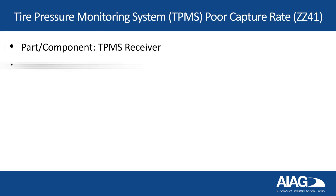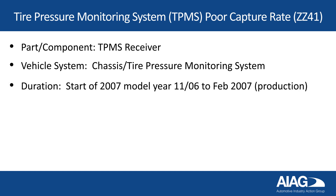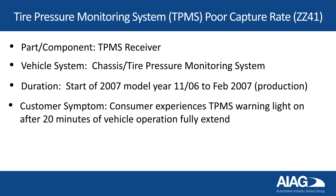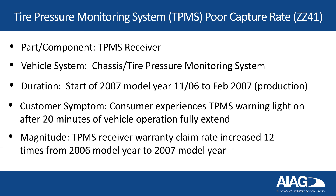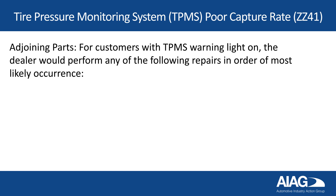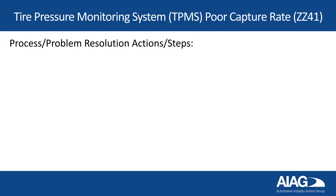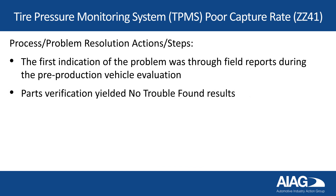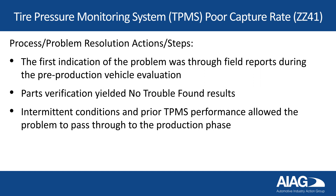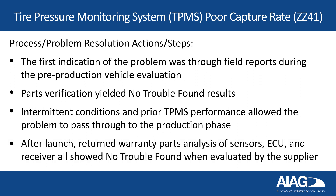Let's start with the Tire Pressure Monitoring System (TPMS) Capture Rate Case Study, which is number ZZ41 for those who have the CQI 14 guideline. In this case, the dealer would complete the repairs in the most likely occurrence. ECU is the electronic control unit in the vehicle. Although the issue was detected, actual parts verification yielded no trouble found results. The intermittent condition and history of TPMS performance allowed the problem to pass through to the production phase. After the model launch, returned warranty parts analysis of sensors, ECU, or receiver all showed no trouble found condition when evaluated by the supplier.